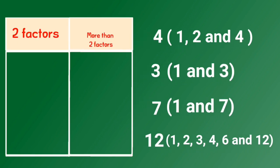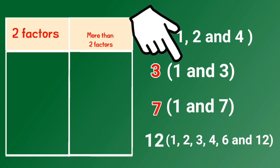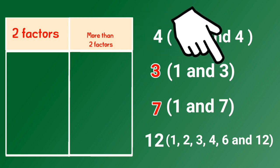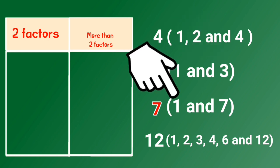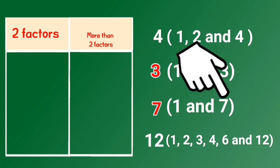Which number has exactly 2 factors? Factors of 7 are 1 and itself.